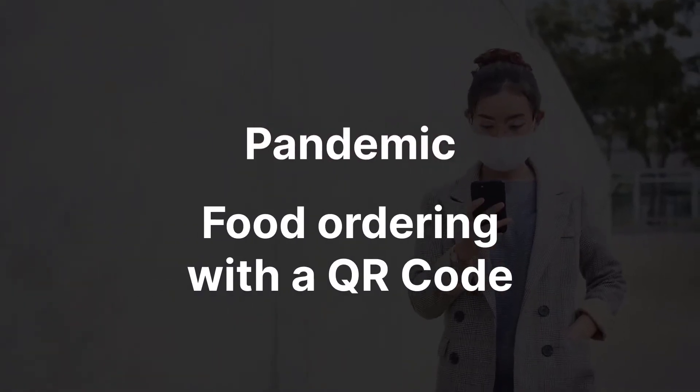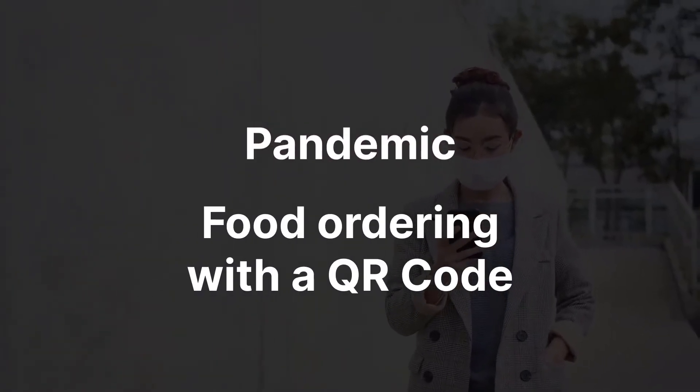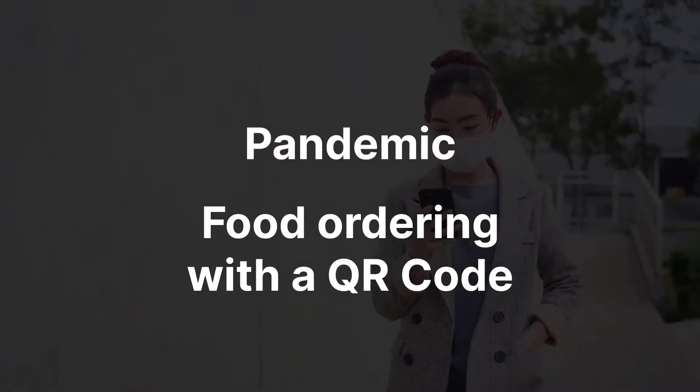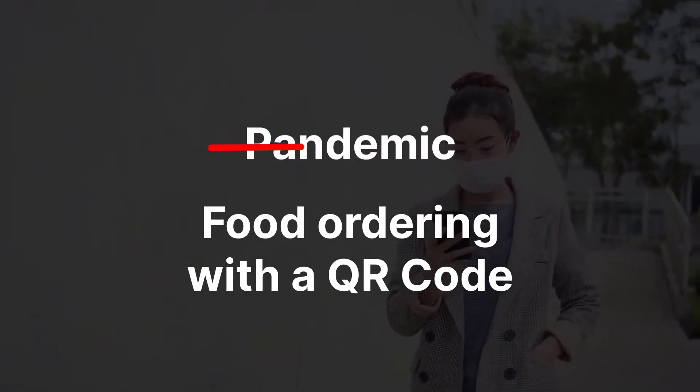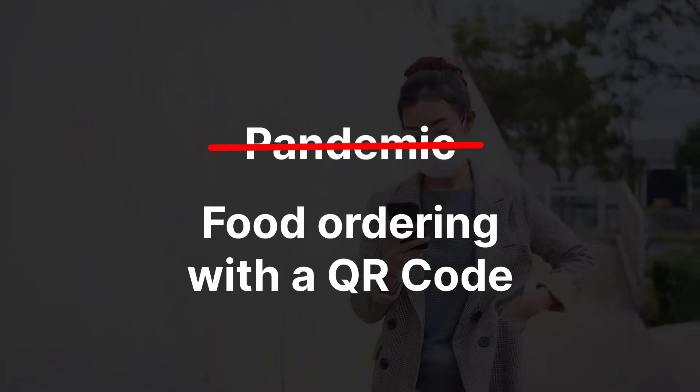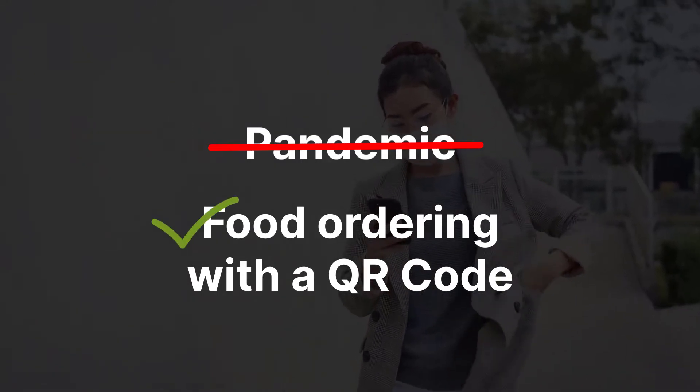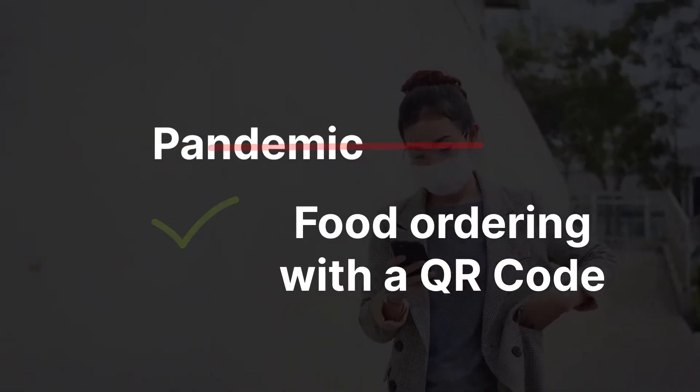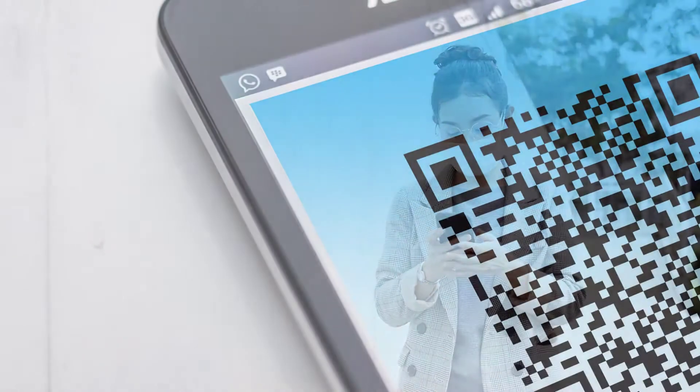Food ordering with QR code became popular during the pandemic. The pandemic died down, but the QR code did not. QR code is a fast and simple way of directing customers to digital menus, which is why they are still useful.